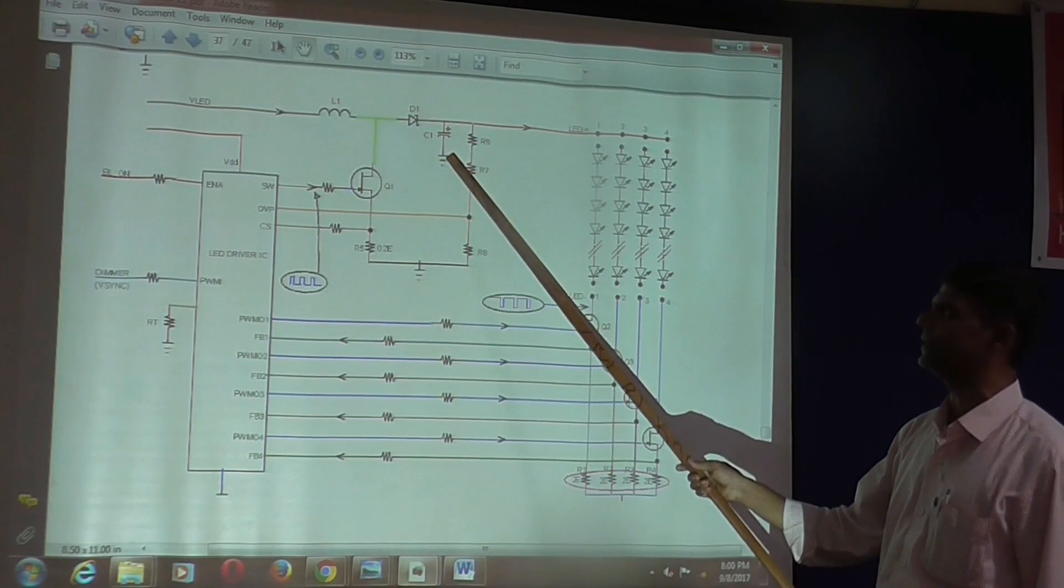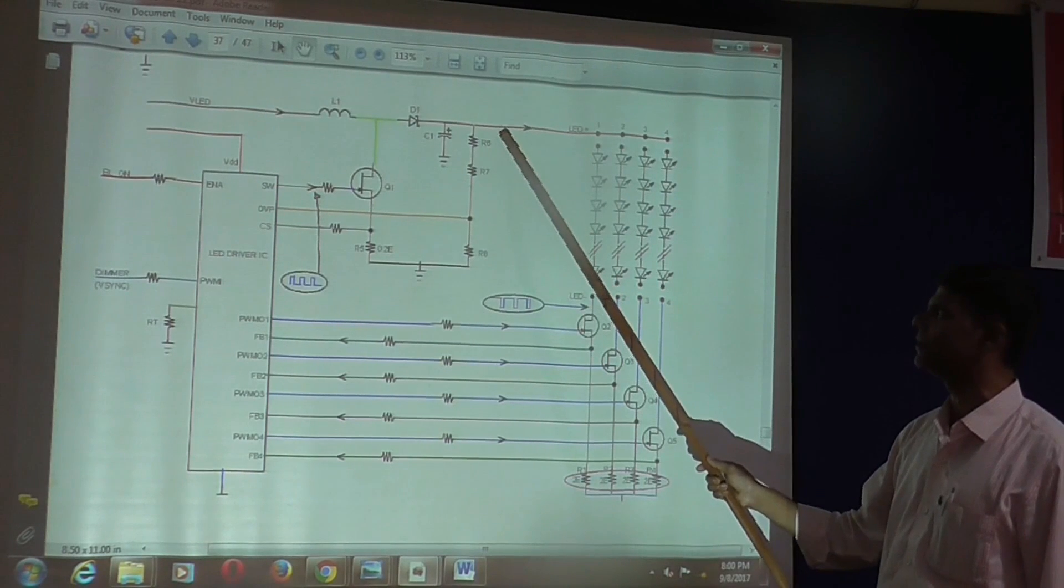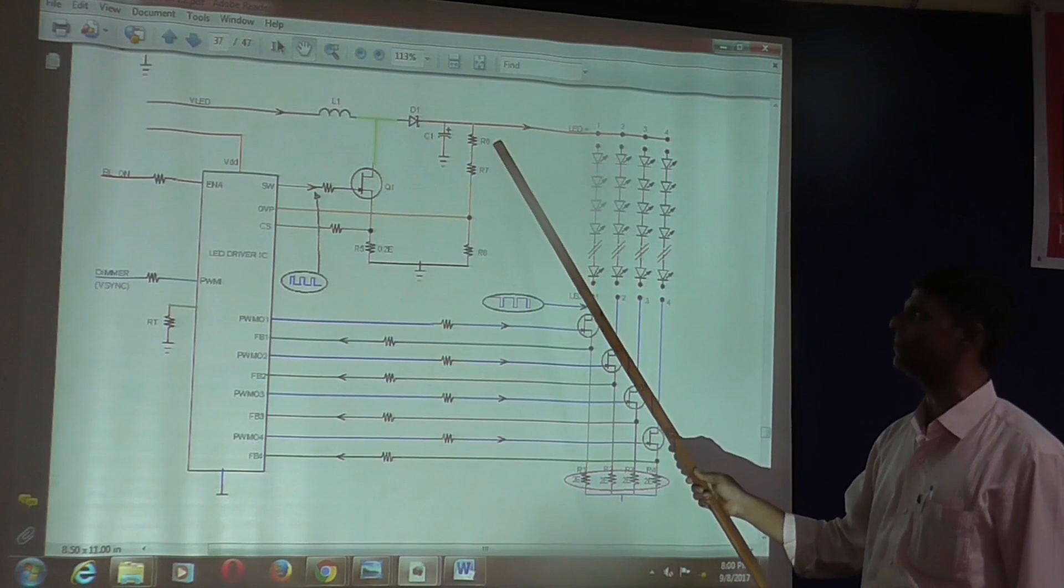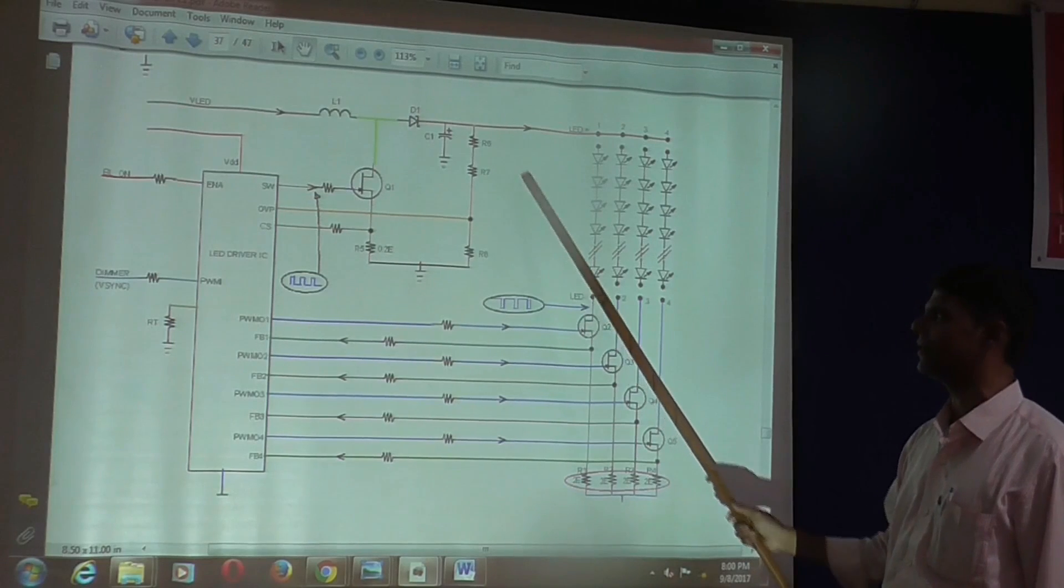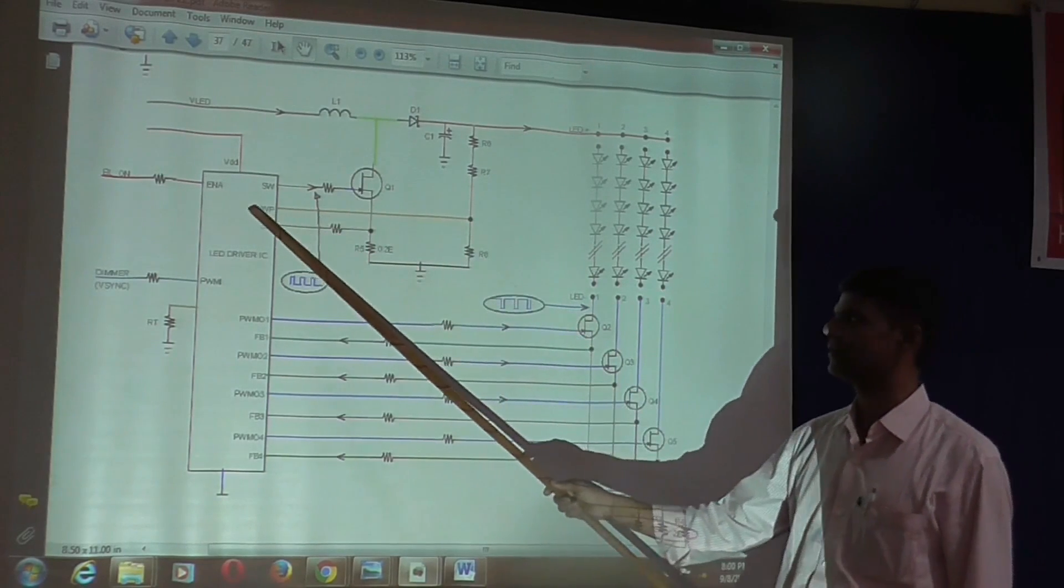by filter capacitor C1, and this voltage is monitored for over voltage by a voltage divider network made from R6, R7, and R3. Whenever this voltage reaches a certain level,